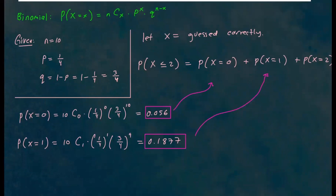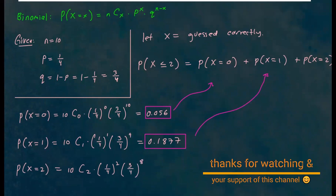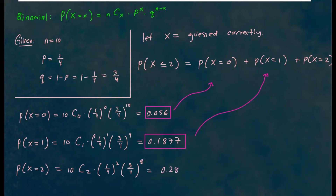For probability that the student guessed two questions correctly: 10 choose 2, times one fourth to the second power, times three fourths to the eighth power. If you put this in your calculator, you get about 0.2816. Then we just add them all up to get the probability of guessing at most two correctly.